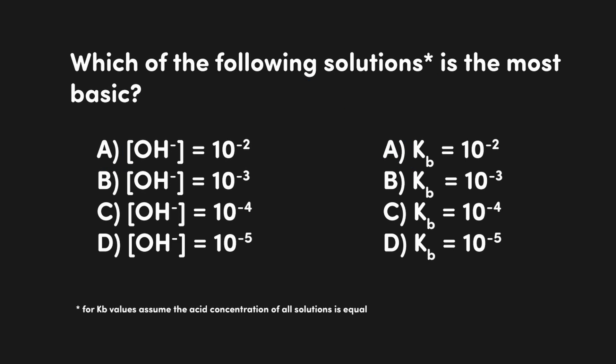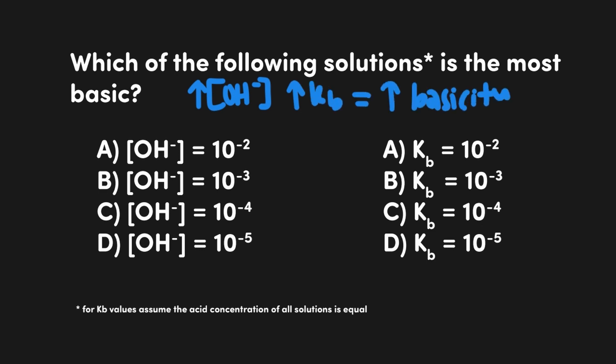Now let's look at this for bases. The next question asks: which of the following solutions is the most basic? Acidity and basicity essentially work the same — it's just that we shift what we measure. For acidity we're measuring H+ and Ka, and for basicity we're measuring hydroxide as well as Kb. So just like we were looking for the highest H+ concentration to find the most acidic solution, we would be looking for the highest hydroxide concentration to indicate the most basic solution. A is also the correct answer because it has the highest hydroxide concentration, and since Kb directly correlates with hydroxide concentration, A is also correct on the Kb side.